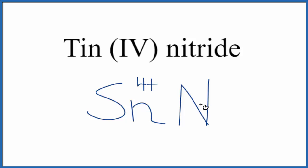If we look at nitrogen on the periodic table, it's in group 15, sometimes called 5A. Those elements have a charge of 3 minus.